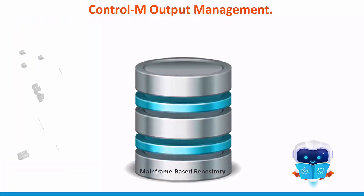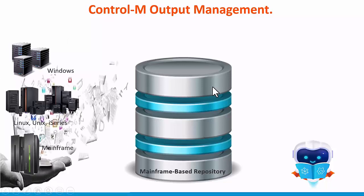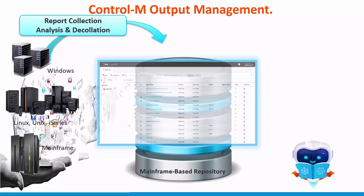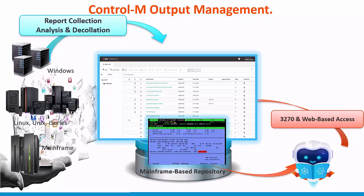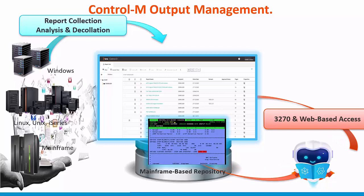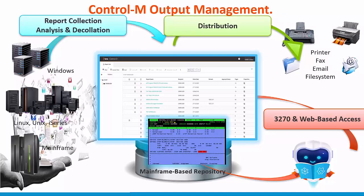Here we can see how it works. Documents and job outputs are generated on different systems and formats. Control-D collects and stores them in a compressed format, assigning the security and distribution parameters. After this step, documents are ready for viewing from web or 3270 terminals, TSO, CICS or VTAM. Reports can then be grouped and sent by email, to a file, or printed.